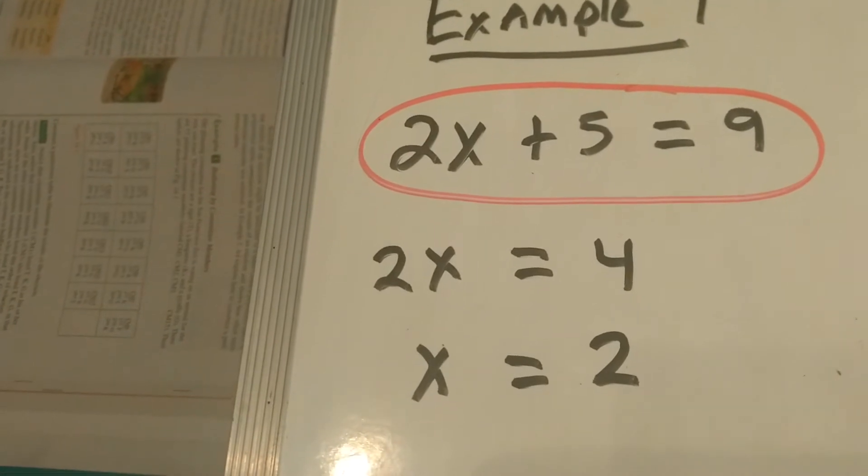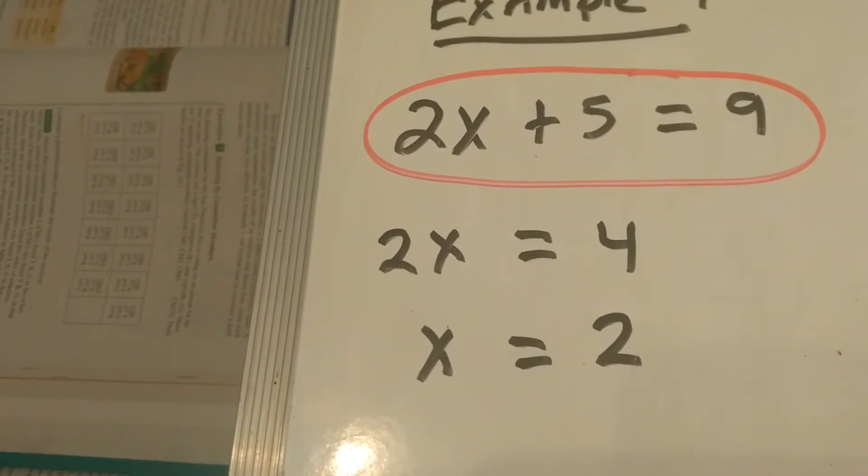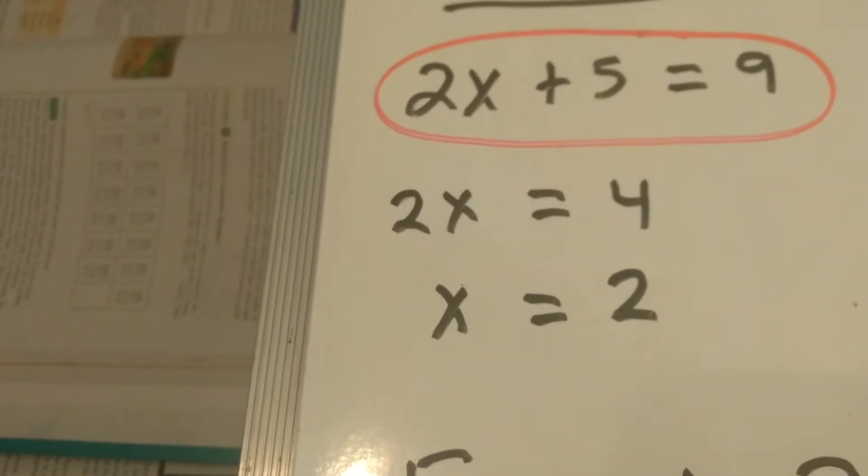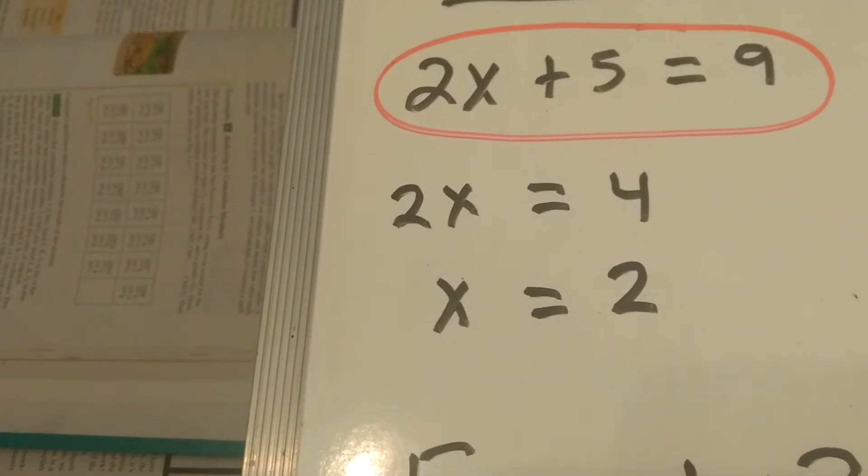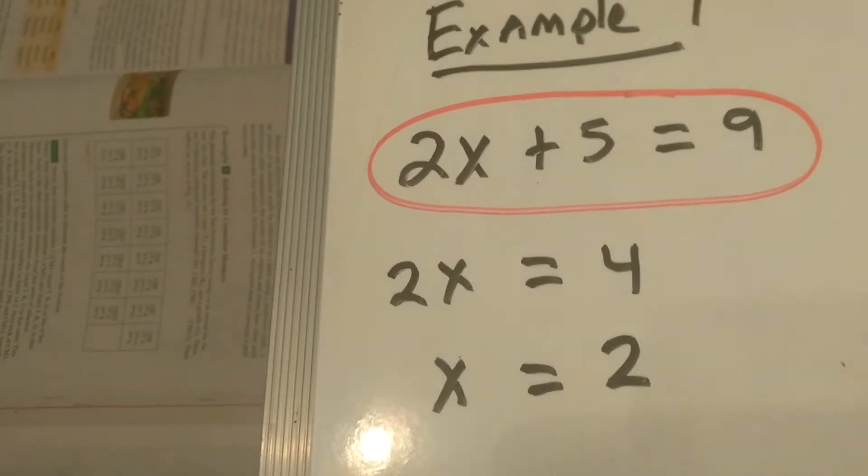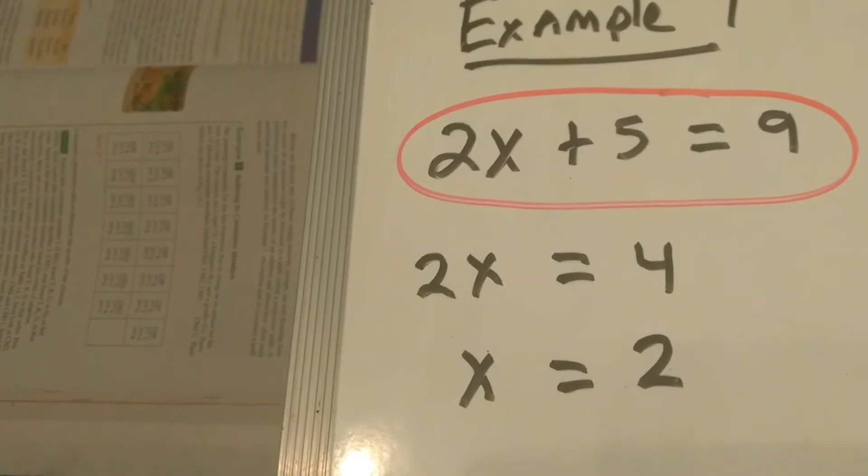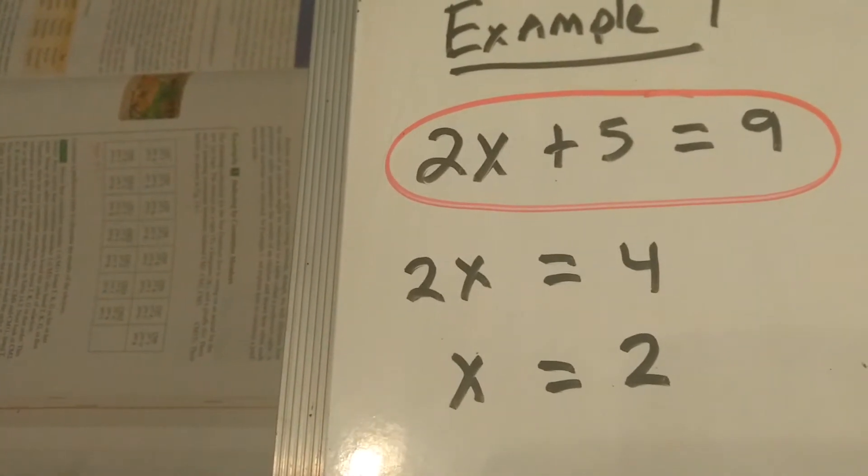The reason we call it two-step form is because if you look at it, the first step we do is we subtract 5 from both sides. That gives us 2x equals 4, then we divide by 2, we get x equals 2. So what I'm going to do here is, in a couple of these other problems, I'm going to circle two-step form to indicate how we got there.